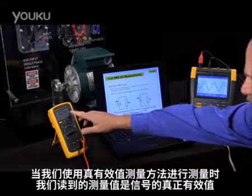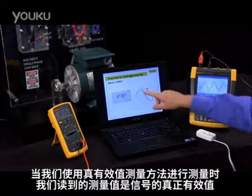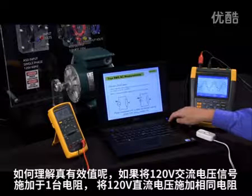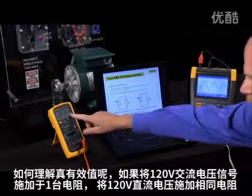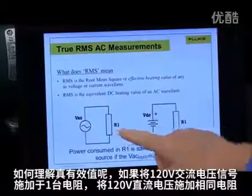When taking an RMS measurement, what we're reading is the RMS value of a signal. What the RMS relates to is if I take a 120 volt AC signal and apply it to a resistor,